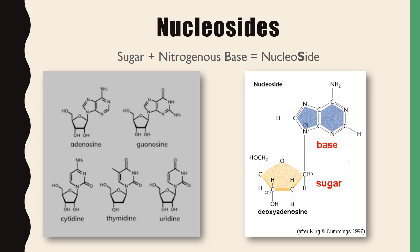Looking at a nucleoside, you should be able to determine if it comes from RNA or DNA by looking at the sugar — is it a ribose or deoxyribose? If there is no OH group and just a hydrogen, it is a deoxyribose sugar. Then, looking at the nitrogenous base, you can determine if it is a purine or pyrimidine. A double ring structure indicates a purine.